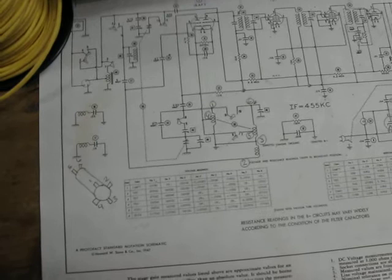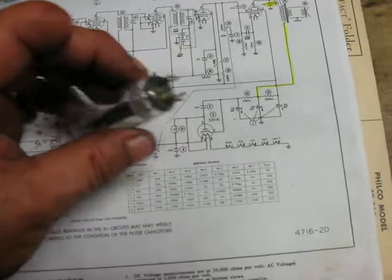Now some of the things I want to show out is I showed you the octal and how they're numbered. And octals, there's a few other tubes, there's the miniature seven and nine pin tubes.